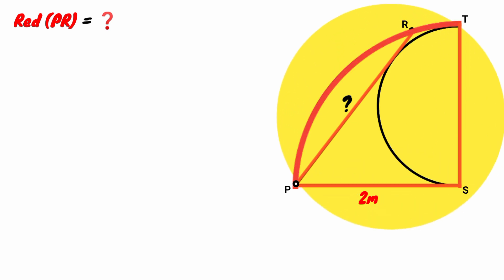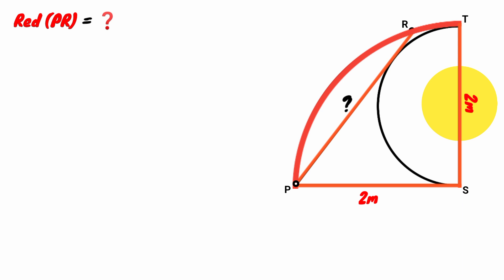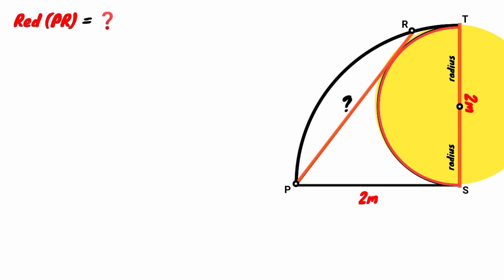From this quadrant, it's obvious that this side is its radius and this is also a radius. The length of this is two meters, therefore this must also be two meters. However, with respect to this semicircle, this side is its diameter. So from the midpoint to each end is a radius, and each radius will be half of two meters in length — that is, one meter.